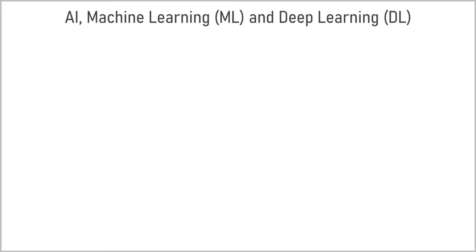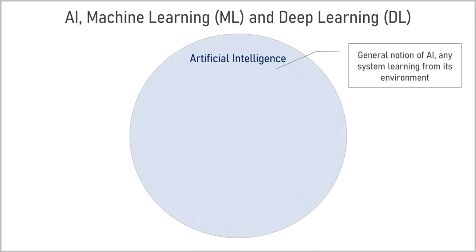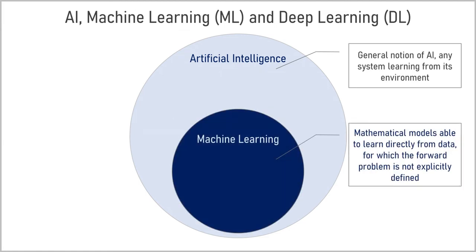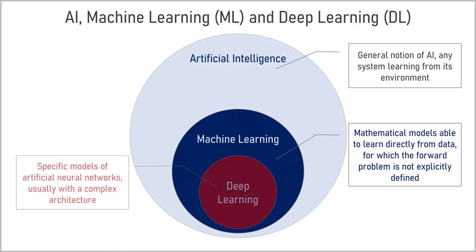In the domain of artificial intelligence, we often invoke the terms machine learning and deep learning. What is the difference between artificial intelligence, machine learning, and deep learning? Usually, we consider that artificial intelligence in general defines any system which is able to learn from its environment. Machine learning is a part of artificial intelligence — it corresponds to mathematical models that can learn from data without being explicitly programmed, or more precisely, the method that solves the inverse problem when the forward problem is not explicitly defined. Finally, deep learning is a particular class of machine learning models corresponding to neural networks, usually with a complex architecture.